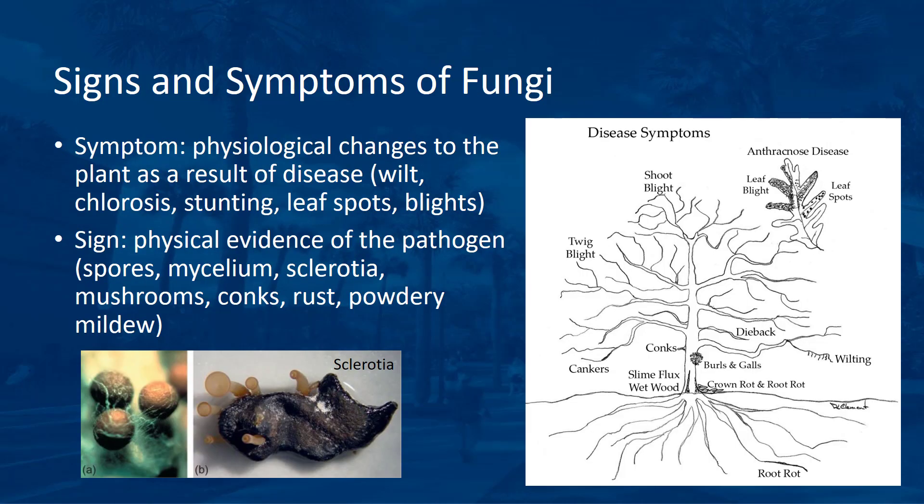With pathogens, you can see signs and/or symptoms. A symptom is the physiological changes to the plant as a result of the disease. For fungi, this may be wilt, chlorosis or yellowing, stunting, leaf spots, or blights. A sign is the physical evidence of the pathogen. This can include spores, such as rust or powdery mildew spores, mycelium, sclerotia (which is a hard resting spore), mushrooms, and conks.